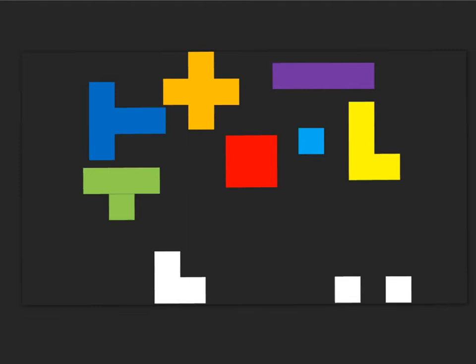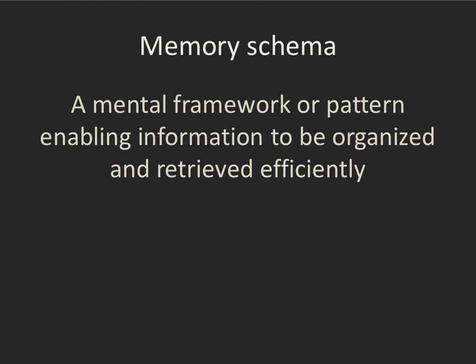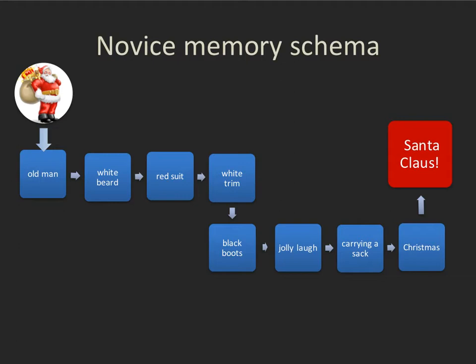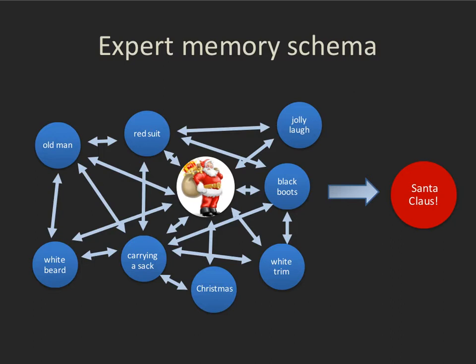These frameworks are also called memory schema. A schema is a framework or pattern within your brain that allows incoming information to be stored and retrieved very efficiently. Part of the process of developing from novice to expert is the development of schema. A novice may have to analyze every single item in a picture in a fairly linear fashion to arrive at a diagnosis, while an expert memory schema can perhaps just hear the laugh and immediately know it's Santa Claus, without a linear process.